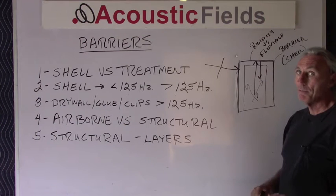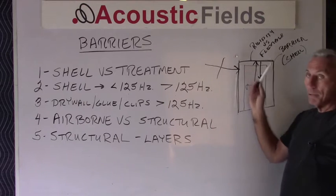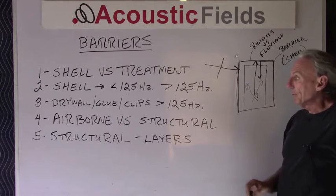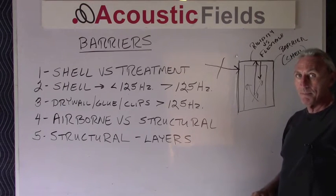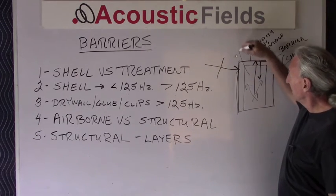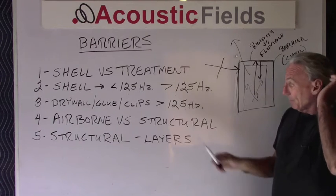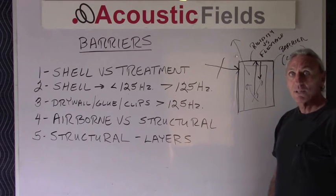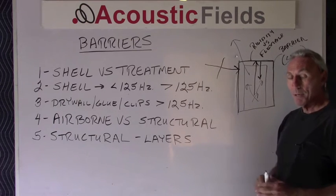It's good technology for above 125 cycles, but not so good for below 125 cycles. So you have to make sure that you're building the correct barrier to match the frequency of the issues and problems you have in the room. I had a client the other day who built a home theater room using this method — he has four subwoofers in the room and he's very unhappy that the low frequency energy is leaving the room and going into adjacent rooms. He was happy with the mids and the highs, and he would be, because anything above 125 cycles the drywall, glue, and clips did a good job. But anything below 125 cycles, it didn't work.